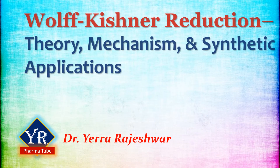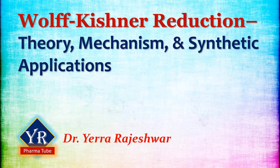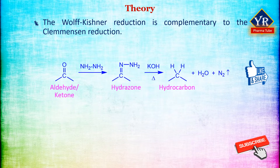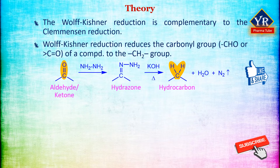In this lesson, we shall learn the theory, mechanism and synthetic applications of Wolf-Kishner reduction reaction. Similar to the Clemmensen reduction as discussed in the previous lesson, Wolf-Kishner reduction also reduces the carbonyl group of a compound to the methylene group. The only difference is that Wolf-Kishner reduction is conducted under basic conditions whereas the Clemmensen reduction involves acidic conditions. Thus, the Wolf-Kishner reduction is a reaction to convert carbonyl groups of aldehydes and ketones into methylene group.